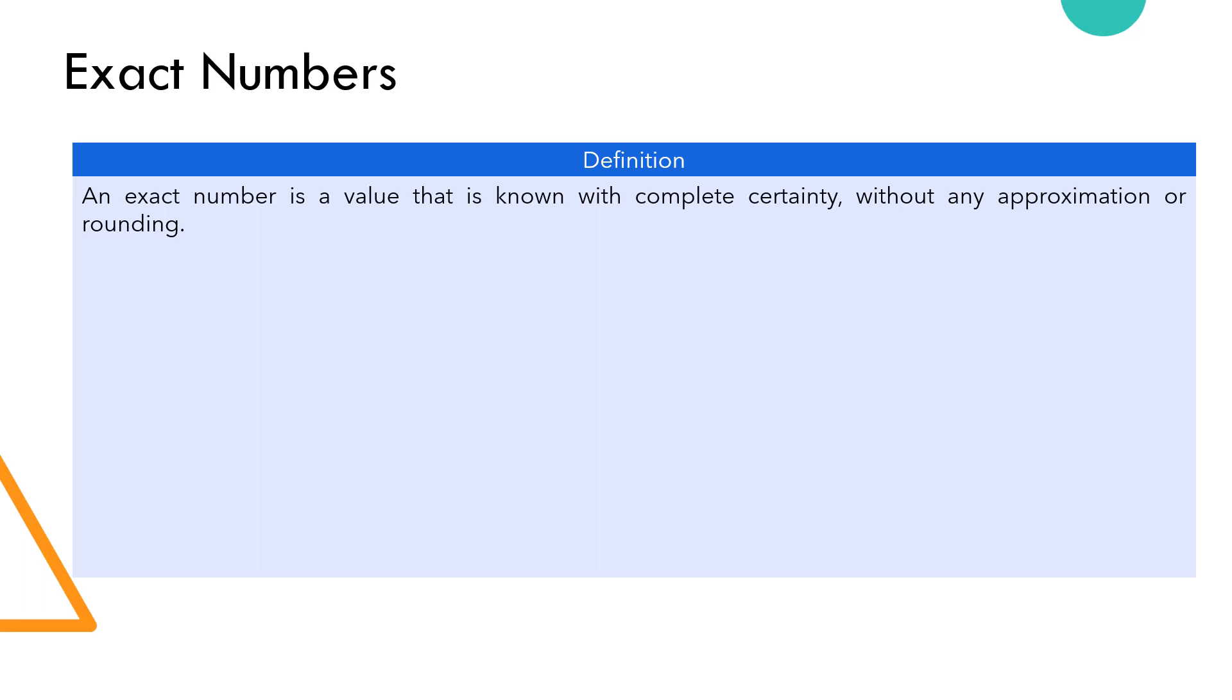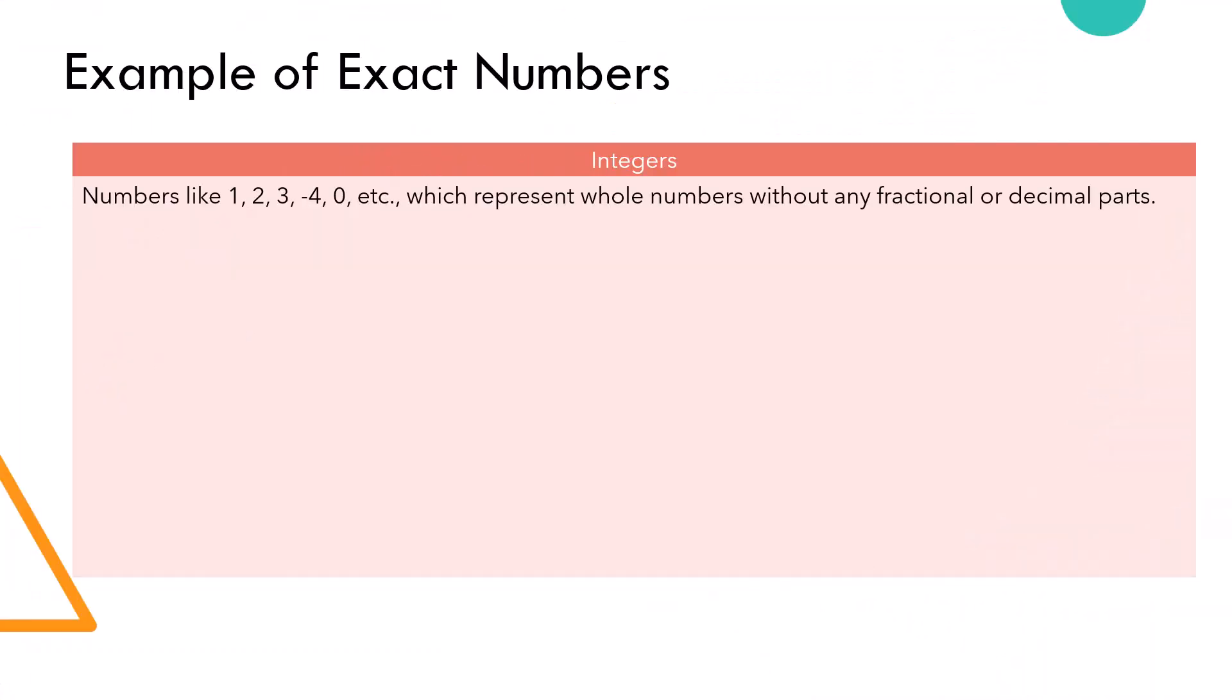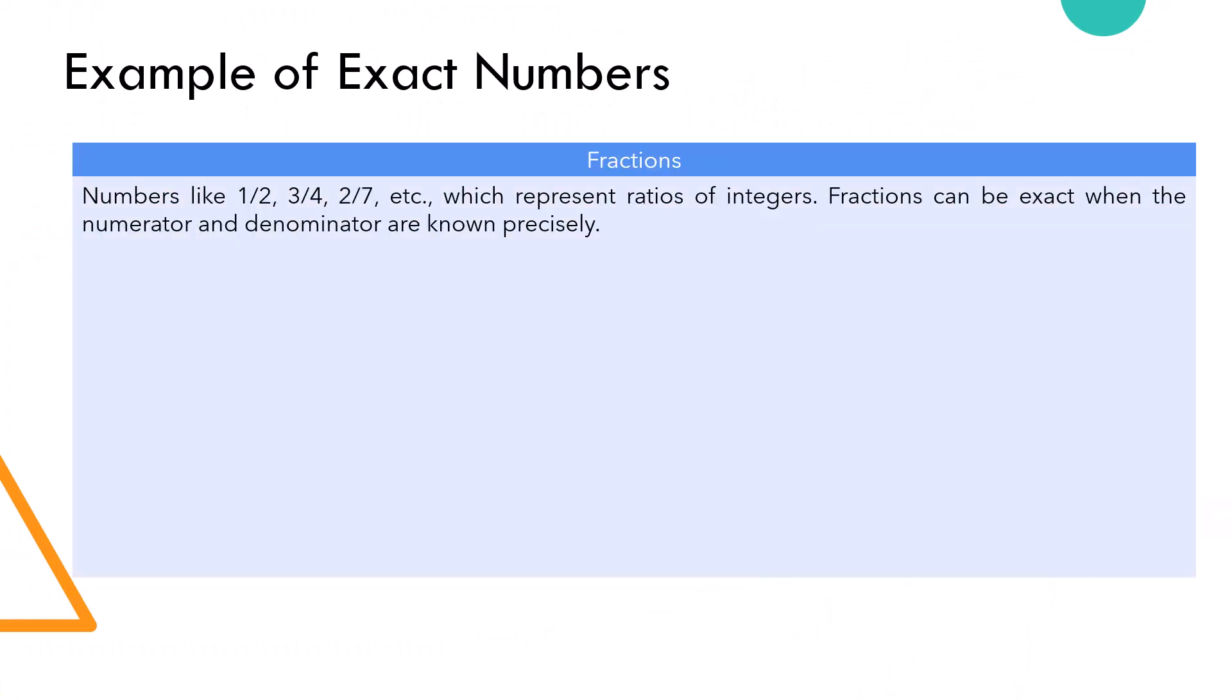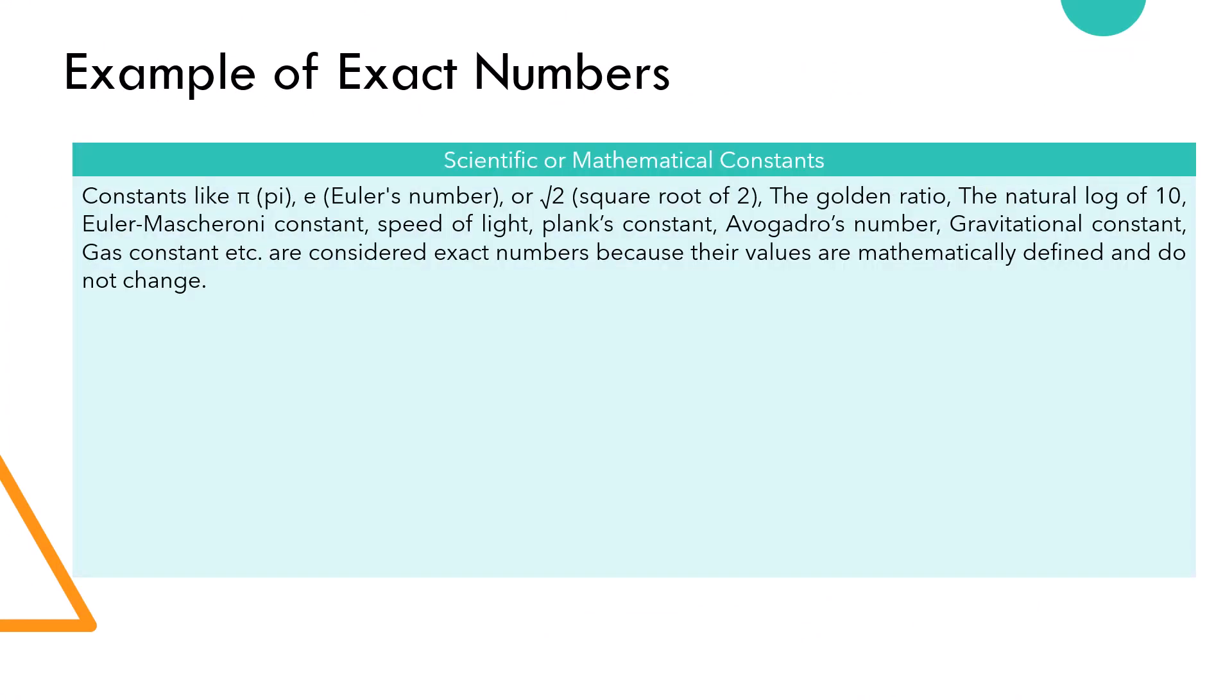Now that we know the definition, let us look at some examples of exact numbers. All integers are exact numbers. All fractions are exact numbers. All scientific or mathematical constants are exact numbers.